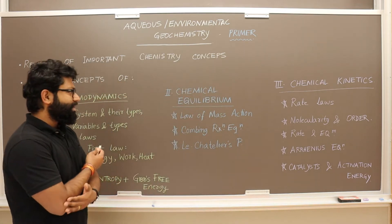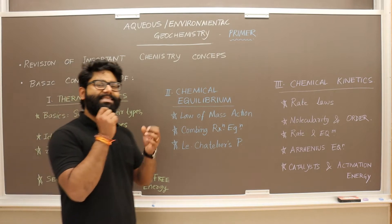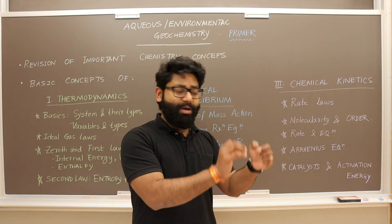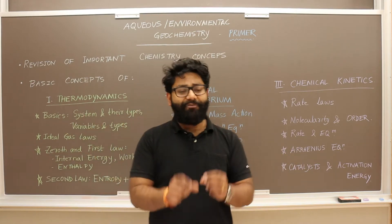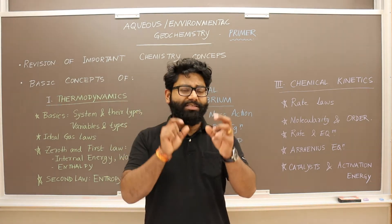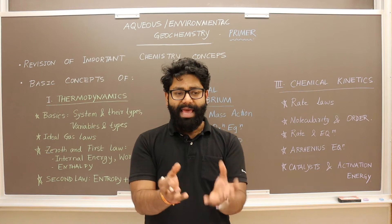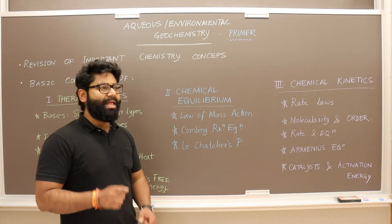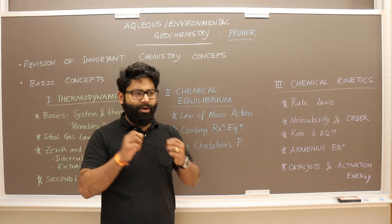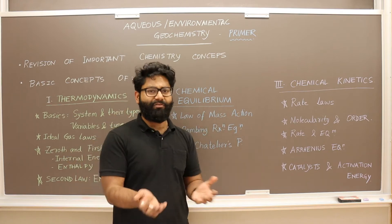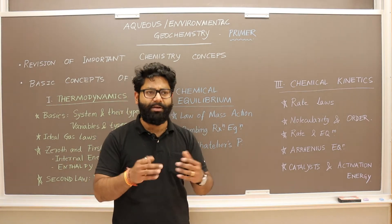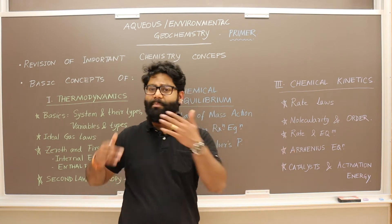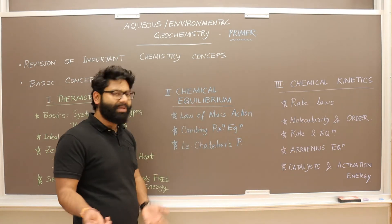Chemical equilibrium tells us to what extent a reaction is going in the forward direction versus the backward direction, and at what concentrations the whole system is at equilibrium. With small changes, we study what happens to the state of equilibrium if you change the pressure, concentration, or temperature — which direction does the reaction shift.